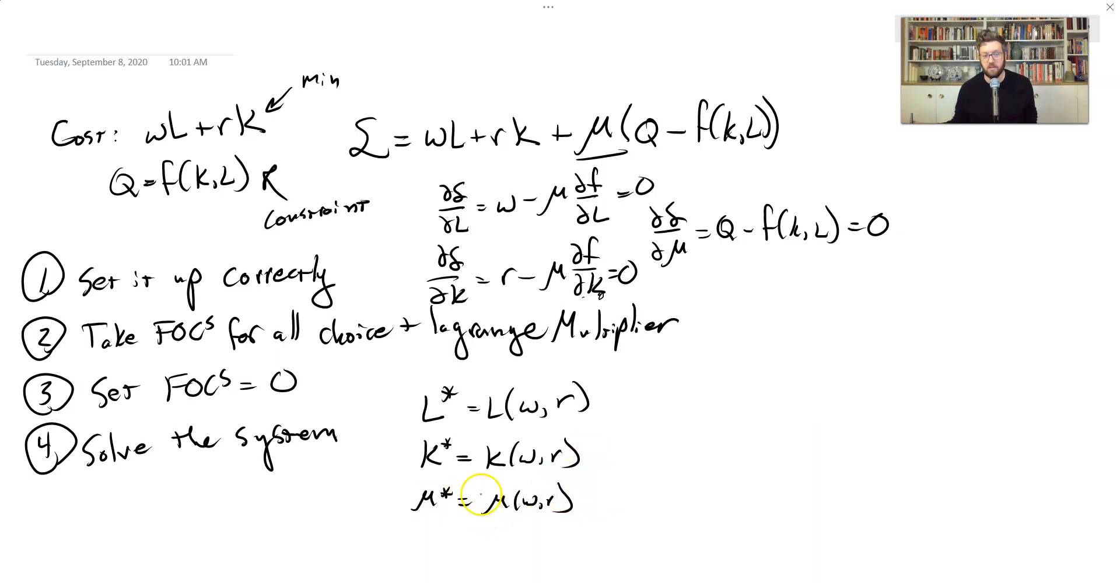But we don't really need this guy in the same way that we need the others. Remember the Lagrange multiplier has an interpretation as sort of how important the, how binding the constraint is, but we don't typically use it in the same way. Like it doesn't tell us something that we observe in the real world.